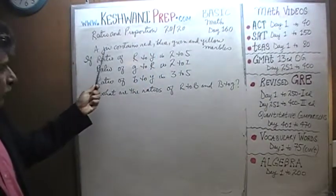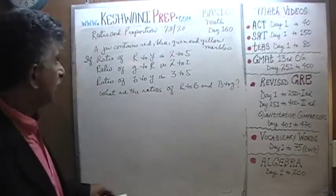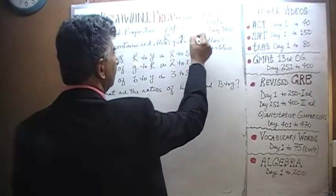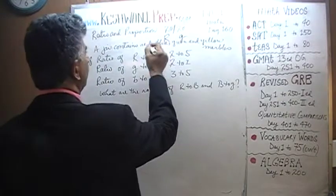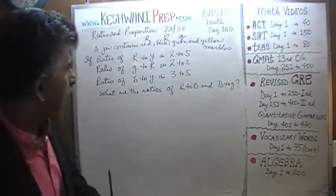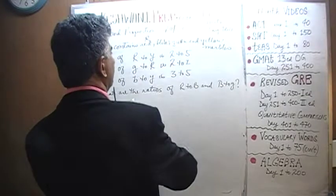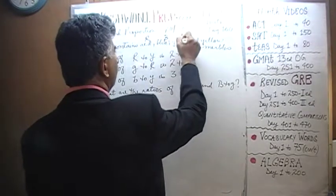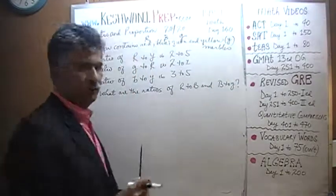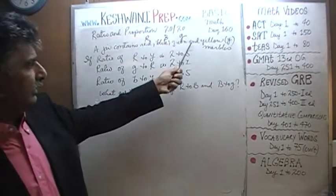We are told that we have a jar. A jar contains red, blue, green, and yellow marbles. We have four colors.